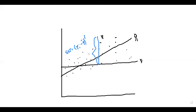The explained sum of squares, SSE, is the deviation of the fitted value ŷ_i from the mean value ȳ. The fitted value ŷ_i is on the regression line, and how much it deviates from ȳ is expressed as SSE, written as (ŷ_i minus ȳ) squared.